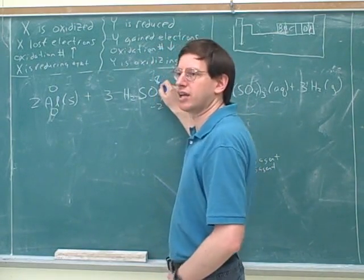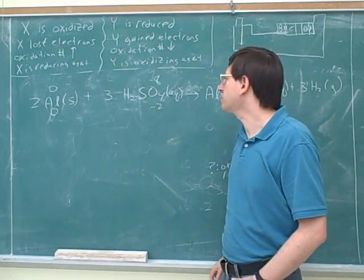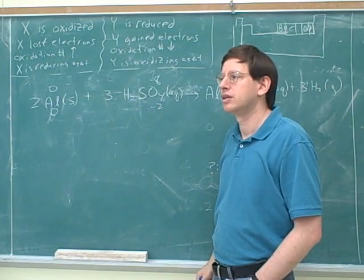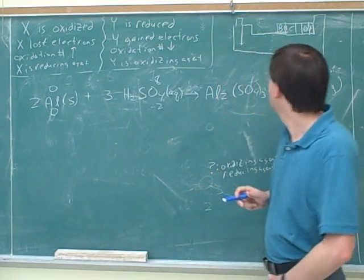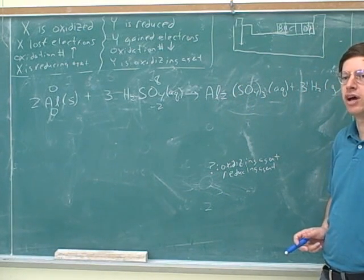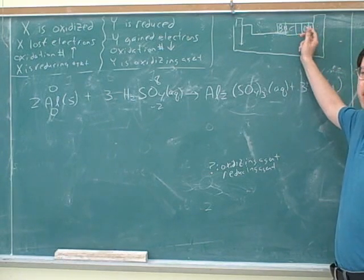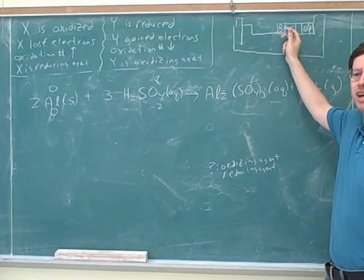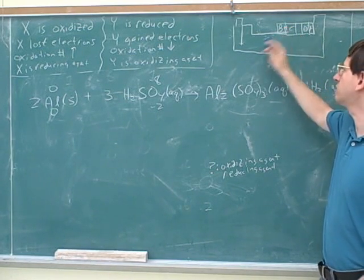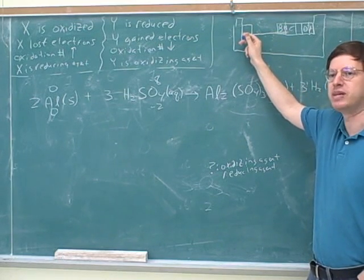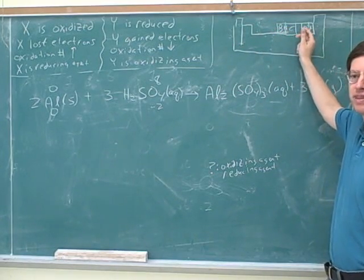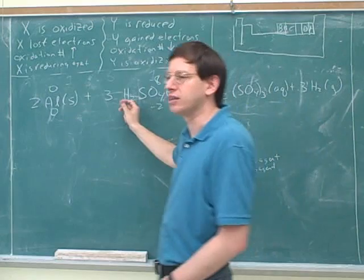Oxygen is minus 2, and with four oxygens that's minus 8. For the hydrogens: plus 1 each, so two hydrogens give plus 2. Hydrogen is bound to other nonmetals here, and hydrogen is the least electronegative of the nonmetals, so it tends to lose its electrons. If hydrogen were bound to metals, it would have a negative 1 charge, because hydrogen is more electronegative than metals. But here it's less electronegative than the nonmetals it's bound to, so it tends to lose its electrons.